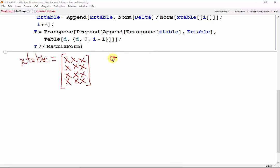Then we have error table which is a 1 by n vector. Now in order to append error table into x table as the last column, first we need to transpose x table.